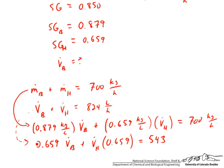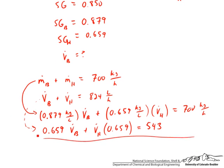Now we can take this equation and that equation and subtract one from the other. What we'll end up with is 0.22 times the volumetric flow rate of benzene equals 157. Then we can solve for the volumetric flow rate of benzene. That should equal 157 divided by 0.22, which equals 714, and that's liters per hour.